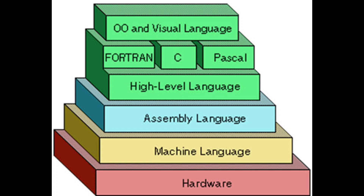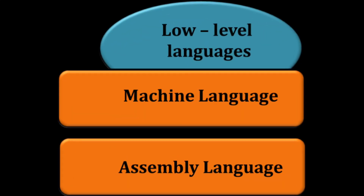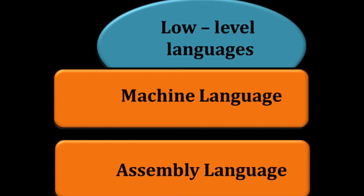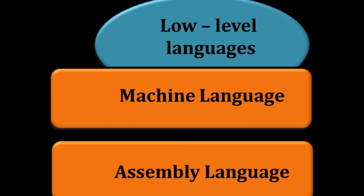Human beings are able to communicate in some languages — for example, Telugu, English, Hindi — communicators use different languages. Similarly, computers have their own languages. There are two types: first, low-level language; second, high-level language.